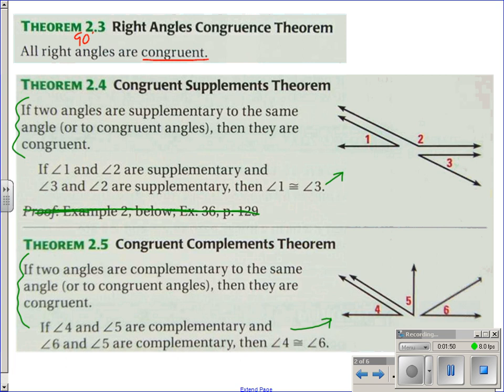For theorem 2.4, congruent supplements theorem, what it says is if two angles are supplementary to the same angle or to congruent angles, then the other angles are equal. So in the picture, you've got angle 1 and 2. Those are supplementary to each other. You have angles 2 and 3. Those are supplementary to each other. Now, supplementary means they add to be 180.